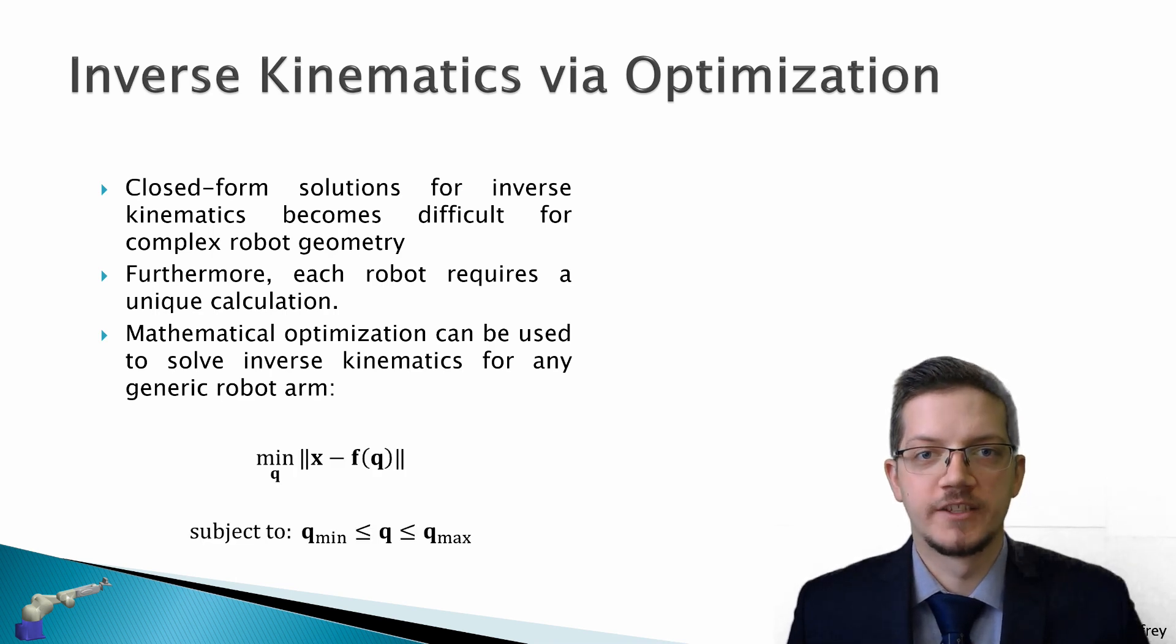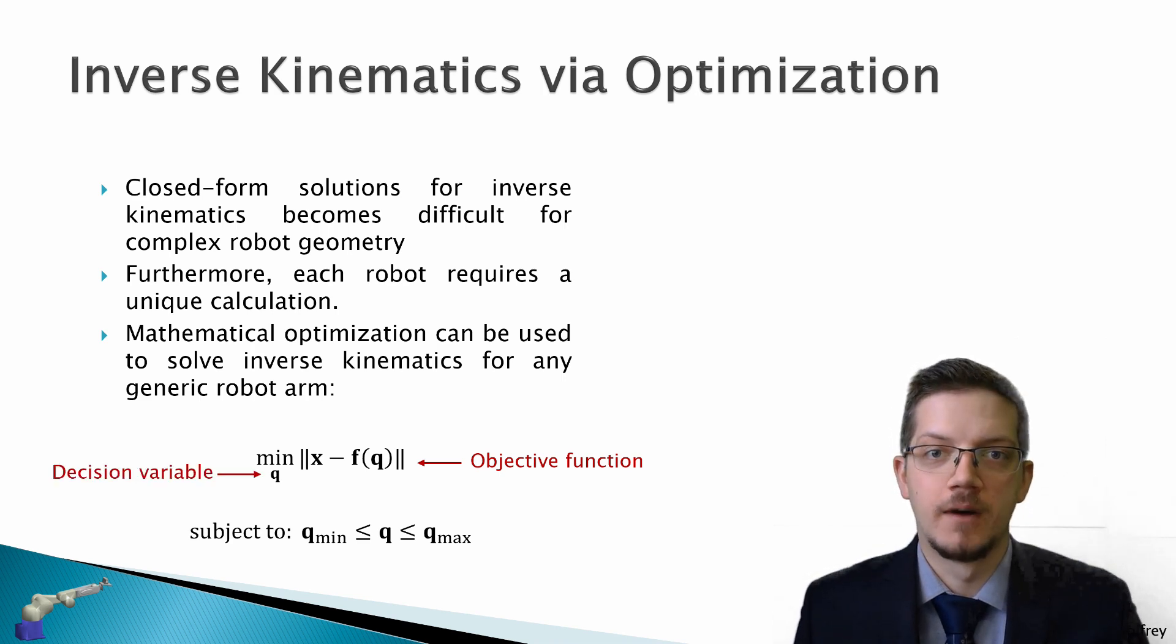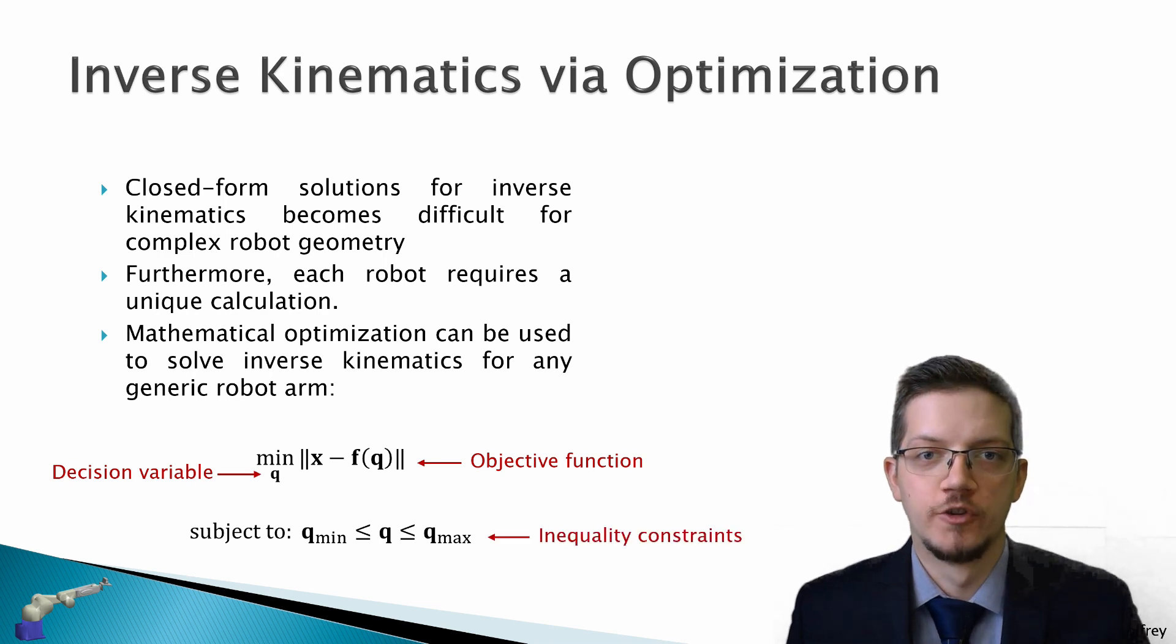So what we want to do is solve this optimization problem where we have our objective function to minimize the robot tooltip pose error, we have our decision variable q, so this is the variable we want to play around with to minimize this error, and we also have our constraints on the solution, that is our solution should obey the joint limits.